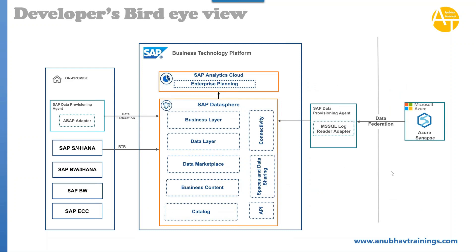Now let's look at the developer's view, or the bird's eye view — how do you develop when you go deep inside it? What is the traditional approach a developer would take before or when developing objects in Datasphere? First of all you have on-premise sources like S/4HANA, BW/4HANA, SAP BW, and ECC systems. Then you can use additional data adapters to provision your data to Datasphere. Datasphere is offered on top of SAP BTP — BTP is the underlying platform infrastructure, and Analytics Cloud is also offered on top of the BTP platform.